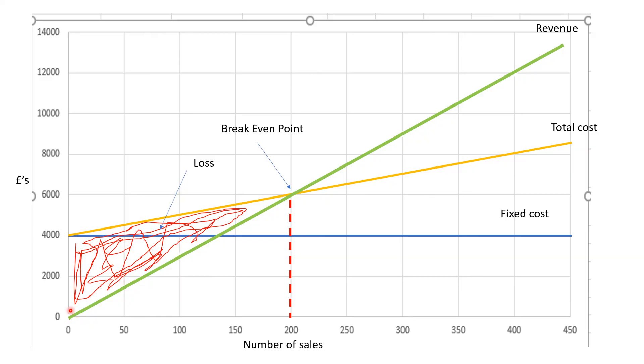So if they sell nothing, they'll be losing £4,000. Conversely, if the revenue is higher than the total cost which is here, we can call this area the area of profit. So if they sell 400 items, their revenue is £12,000, their total cost is £8,000. We would predict that they would make £4,000 profit.